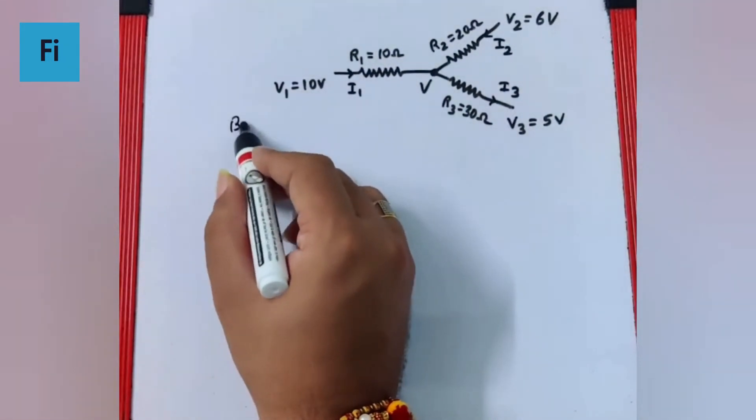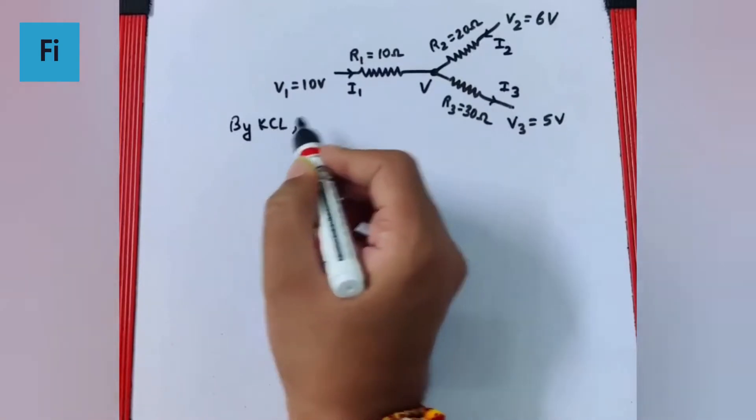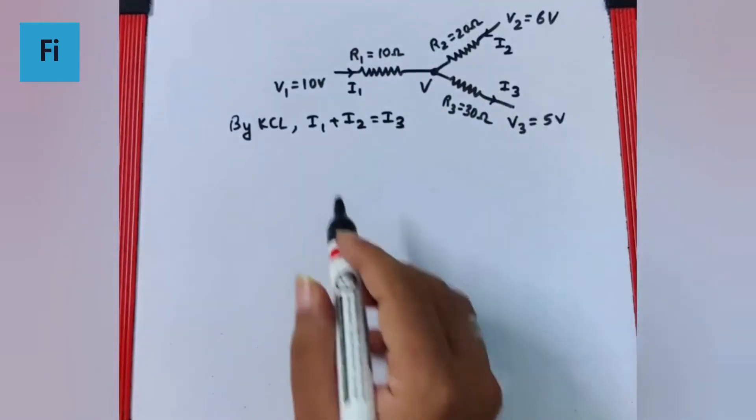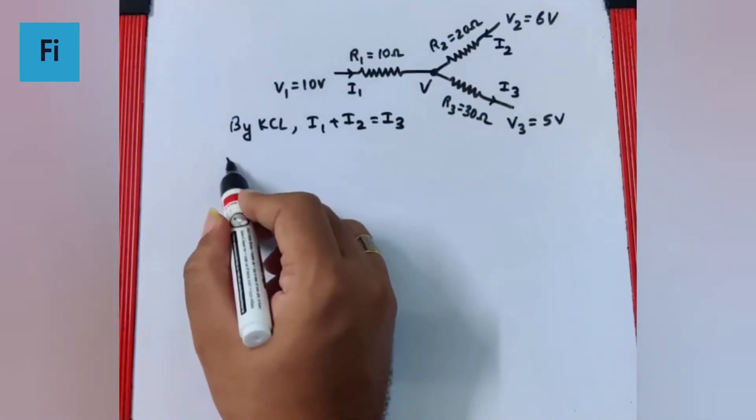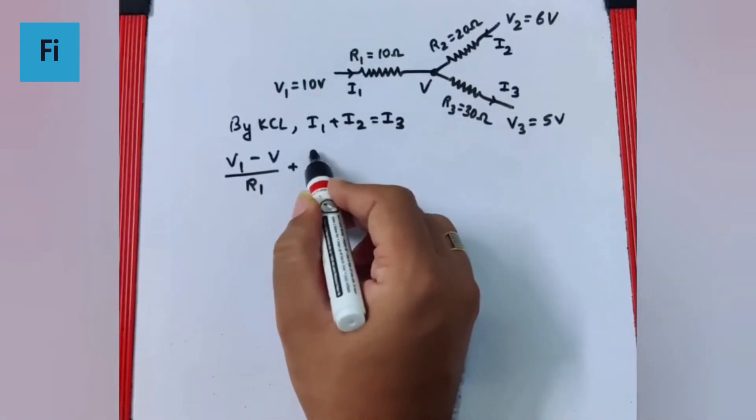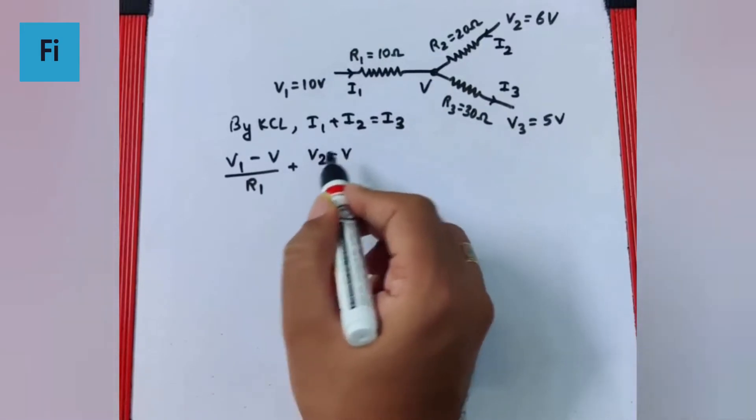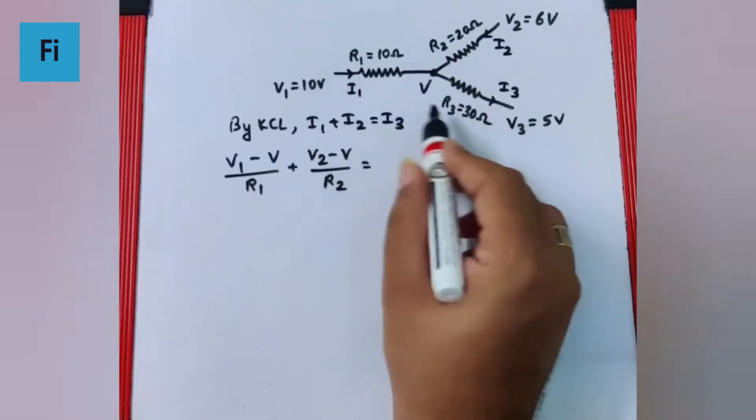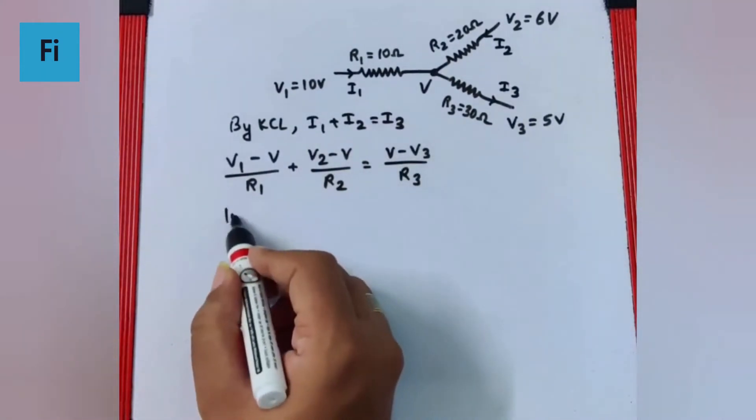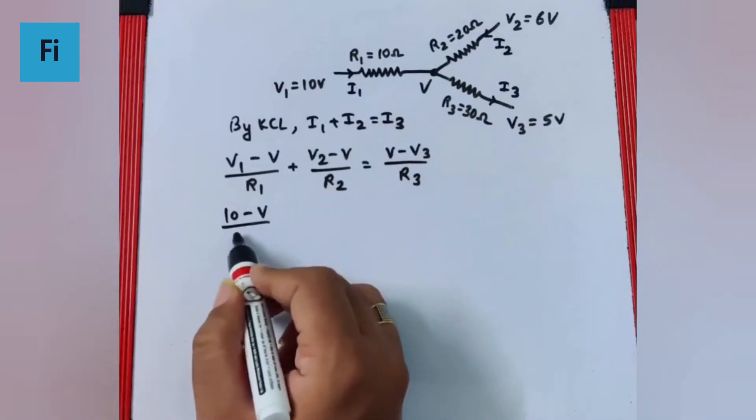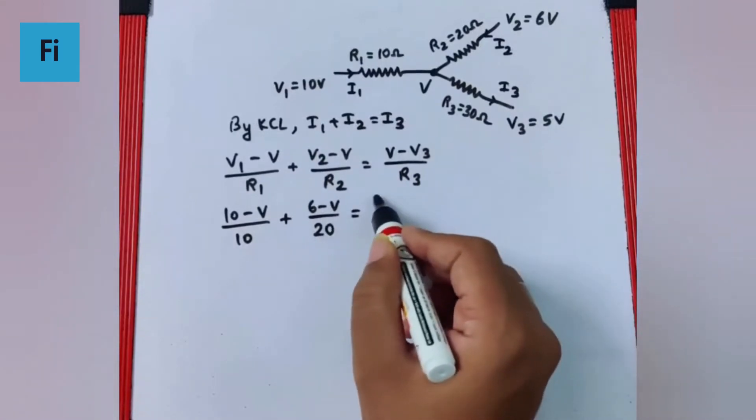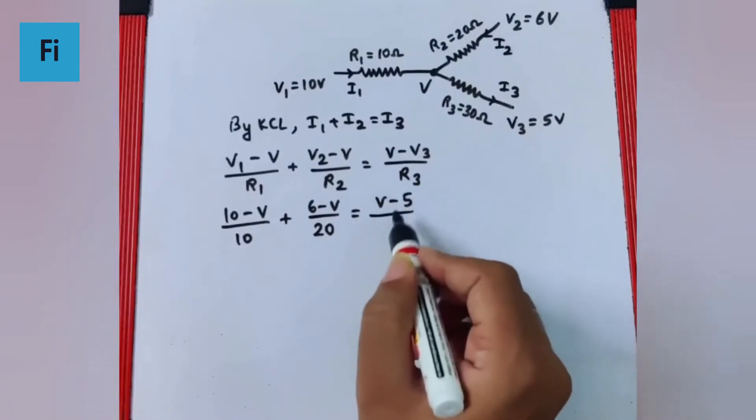If we apply KCL in the circuit, we get I1 plus I2 equals I3. Now, I1 will be V1 minus V by R1, I2 will be V2 minus V upon R2, and I3 will be V minus V3 upon R3. Substituting these values, we get 10 minus V by 10 plus 6 minus V by 20 equals V minus 5 by 30.